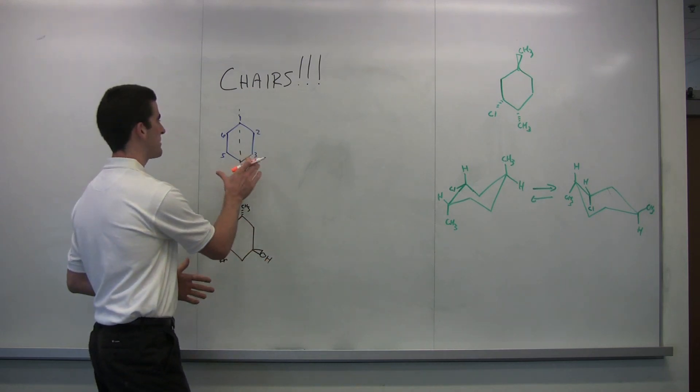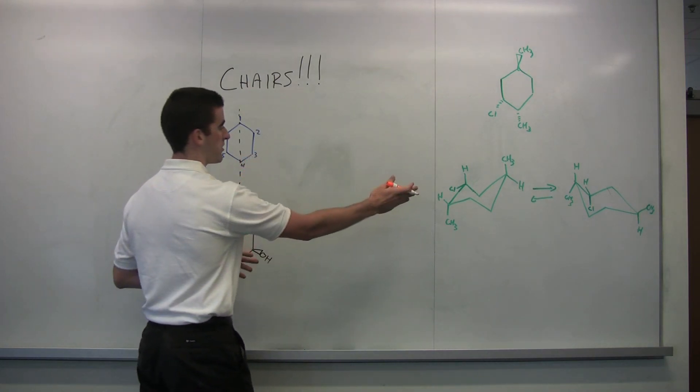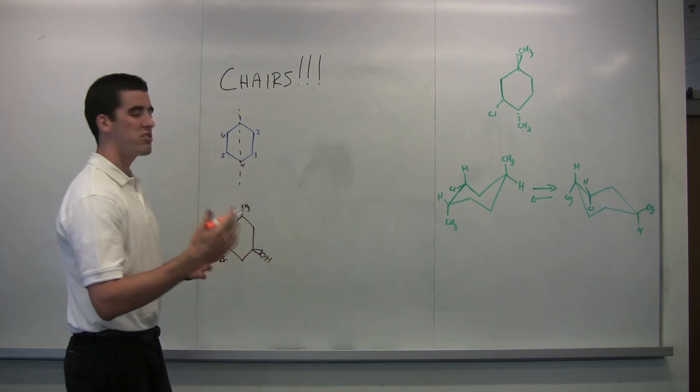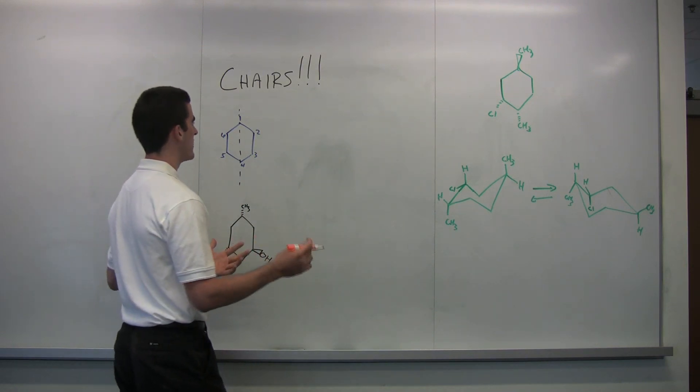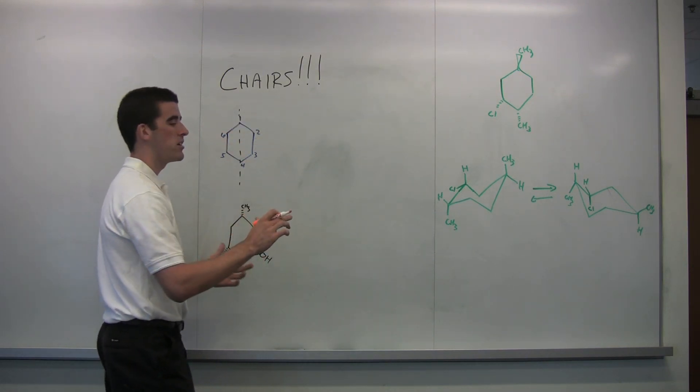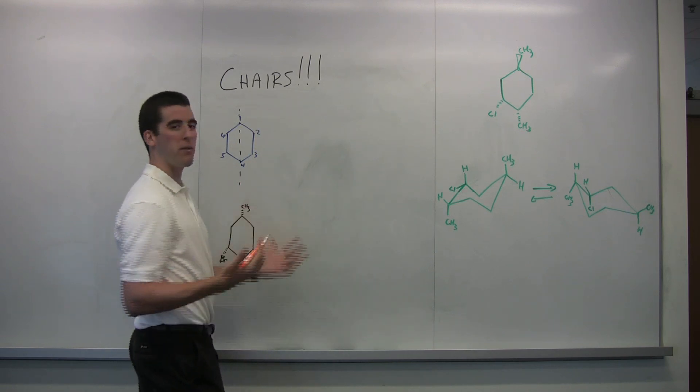So the first thing you need to do is learn how to draw a six-membered chair like they have over here on the right. It's kind of tricky at first. There's a couple ways you can do it, but the way I'm going to explain it is by using the numbering system here and then just using a way called mountain valleys.